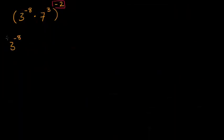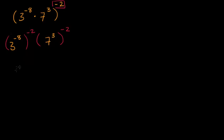So this is going to be the same thing as three to the negative eight, and then that to the negative two, times seven to the third to the negative two. And if I want to simplify this, we have the other exponent property that if you're raising to an exponent and then raising that whole thing to another exponent, you can just multiply the exponents. So this is going to be three to the negative eight times negative two power.